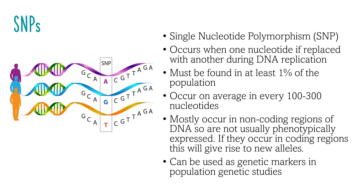To be classified as a SNP, this altered DNA sequence must be found in at least 1% of the population. SNPs occur about once in every 100 to 300 nucleotides in our DNA, which has around 3 billion nucleotides in total. SNPs are useful in genetic studies because they may be linked to changes in appearance, enzyme function, disease susceptibility, or drug responses. However, most SNPs are found in non-coding regions of DNA and do not lead to noticeable differences.